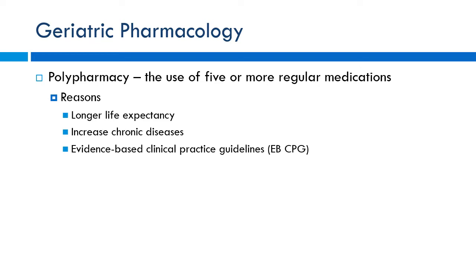With elderly patients, polypharmacy — the use of five or more regular medications — is extremely common. This is because patients are living longer due to longer life expectancy, developing more diseases requiring treatment, and because we have evidence-based guidelines to follow. Depending on the suite of diseases a patient has, it's not uncommon for them to be on a dozen different medications.